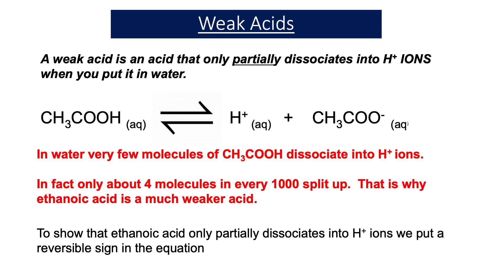In previous videos, we've learnt that a strong acid totally splits up into H-plus ions when you put it in water. So for example, hydrochloric acid totally splits up into H-plus ions, and if we had a thousand molecules of HCl, we'd have a thousand H-plus ions.